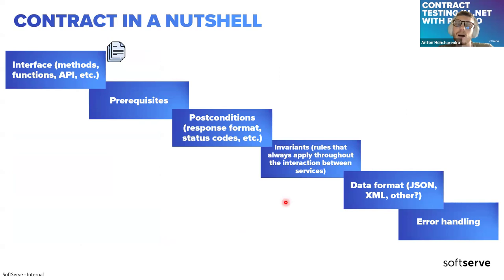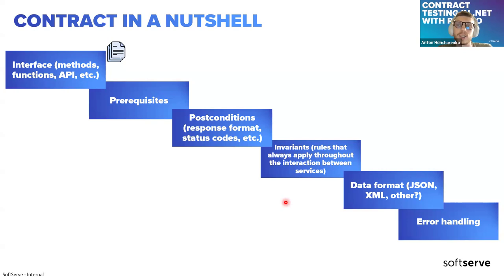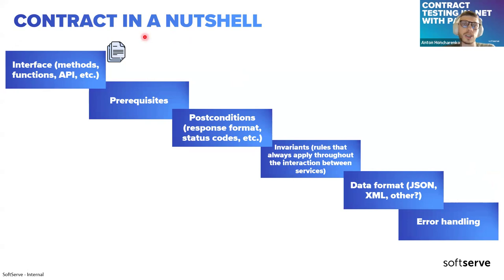The contract is basically a set of rules that our consumer and provider should follow. I usually think about the contract as some sort of a file in some format that we can provide to the consumer or the provider so they can verify their behavior and their inputs and outputs against it. That's the shared understanding that consumer and provider teams follow.